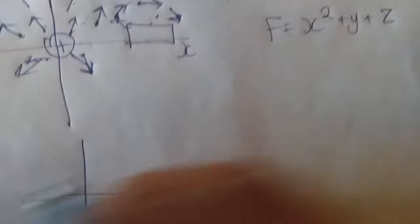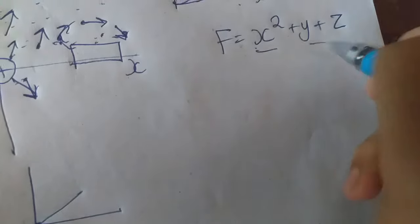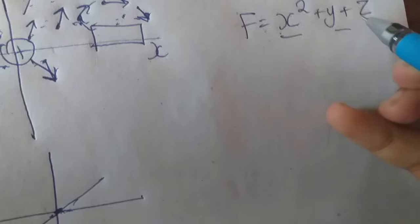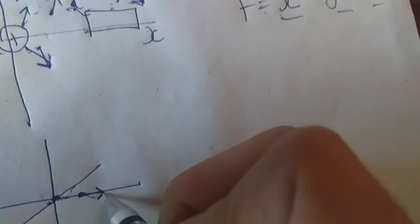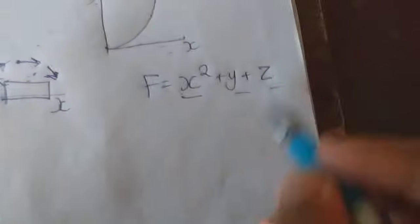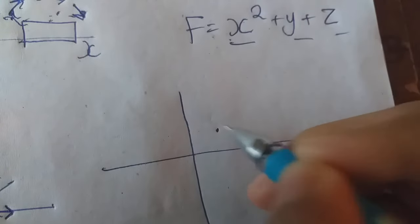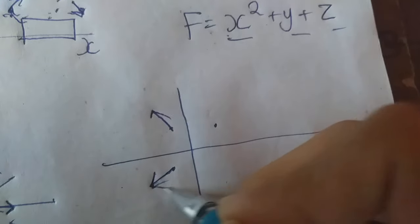Then the field is 0. It is 3-dimensional. Then the function is 0, then the vector is 0. Then the function is a vector. You have a two-dimensional function. Then you have a two-dimensional field.